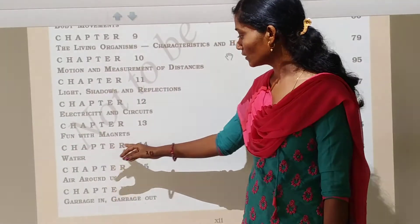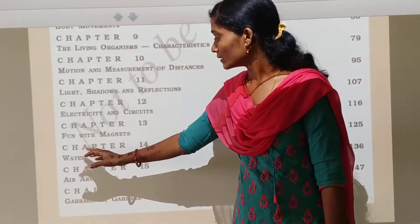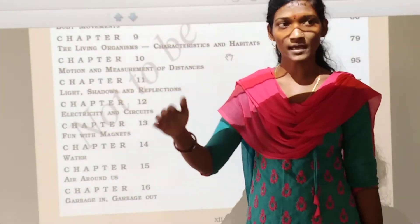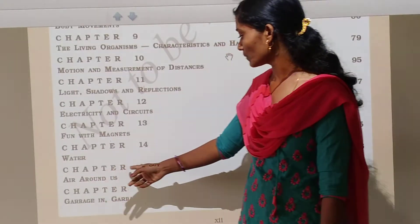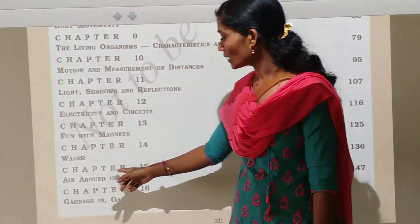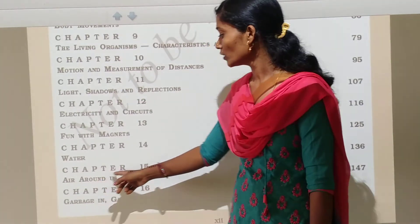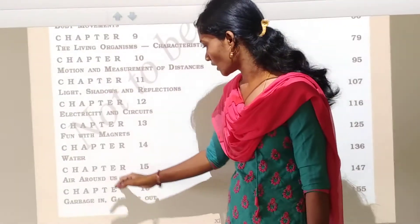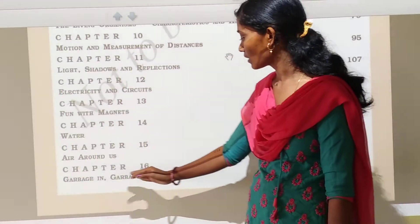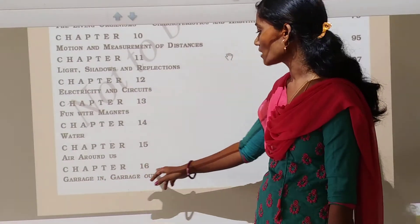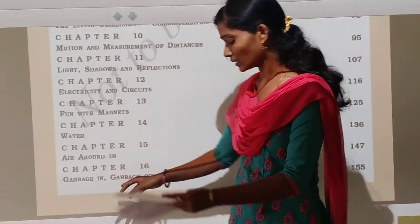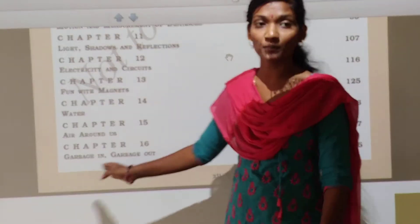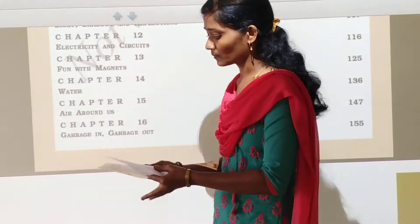Next, chapter number 14: Water. In this lesson we study about the properties of water, oceans and sea waters. Next, chapter number 15: Air around us. Air expands on heating and balloons are changing. Next, chapter number 16: Garbage in, garbage out. In this chapter we study about the recycling of paper and composites.